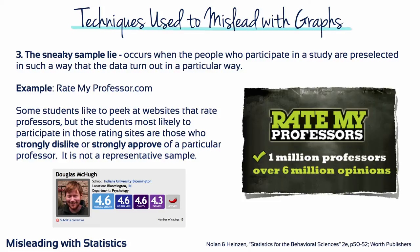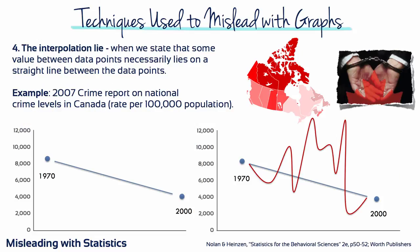Number three: the sneaky sample lie. A sneaky sample occurs when the people who participate in a study are pre-selected so that the data turn out in a particular way. For example, some students like to check out websites that rate professors, but the students most likely to participate in those rating sites are those who strongly dislike or strongly approve of a particular professor — it's not a representative sample of all students. Number four: the interpolation lie. Interpolation occurs when we state that some value between the data points necessarily lies in a straight line between those data points. For example, in a 2007 report on national crime levels, Statistics Canada reported one of the lowest rates of property crime since the 1970s. Without the full set of data, it would be easy to assume that a gradual and steady decline in crime levels had occurred over 30 years.